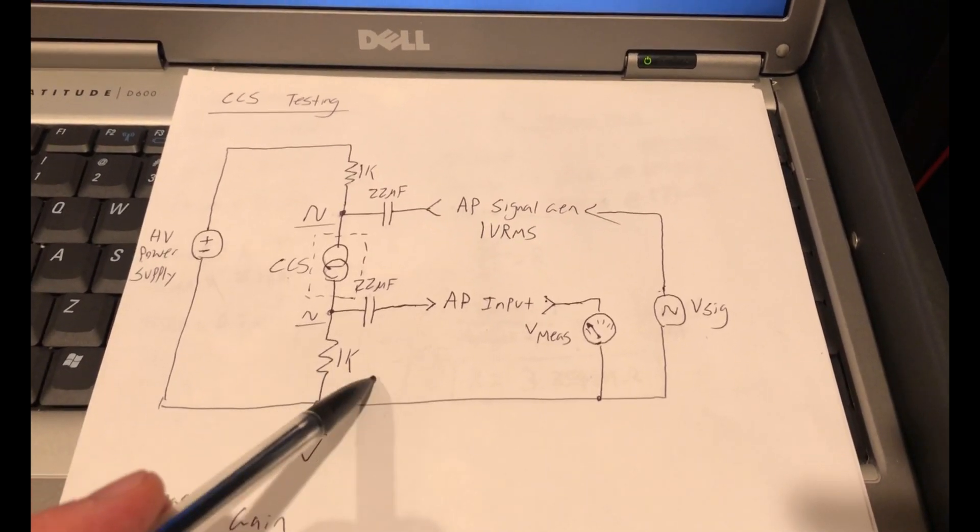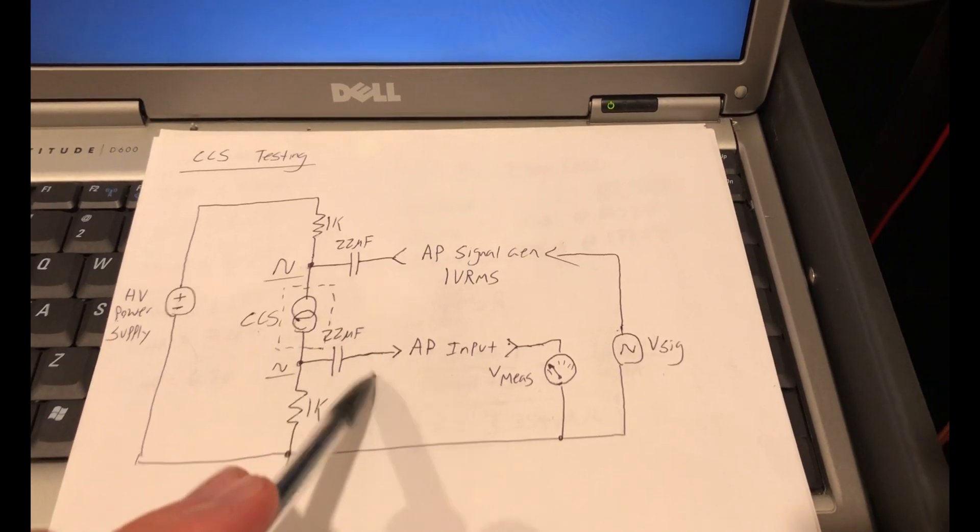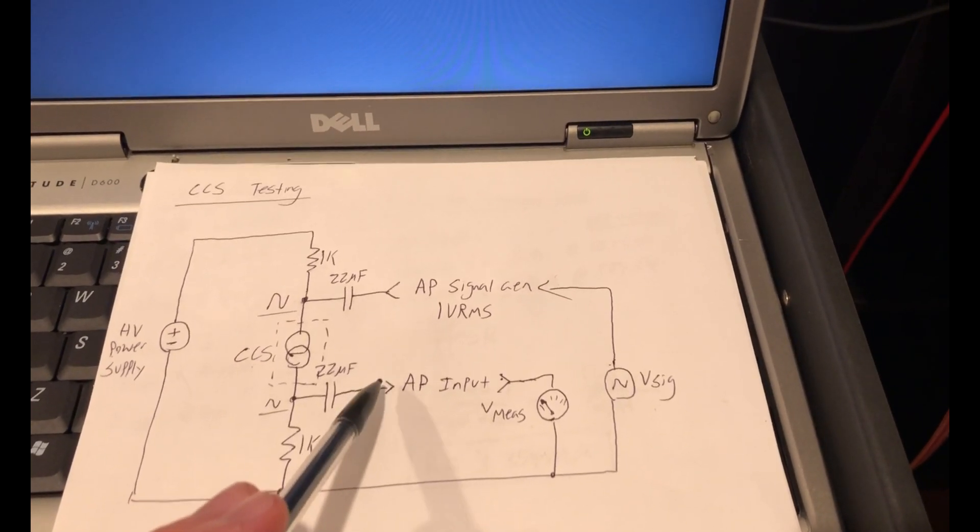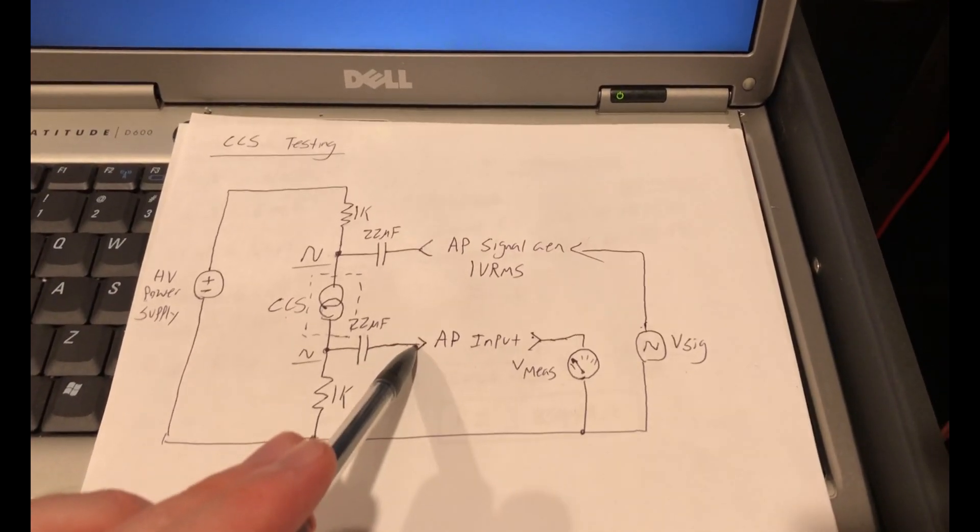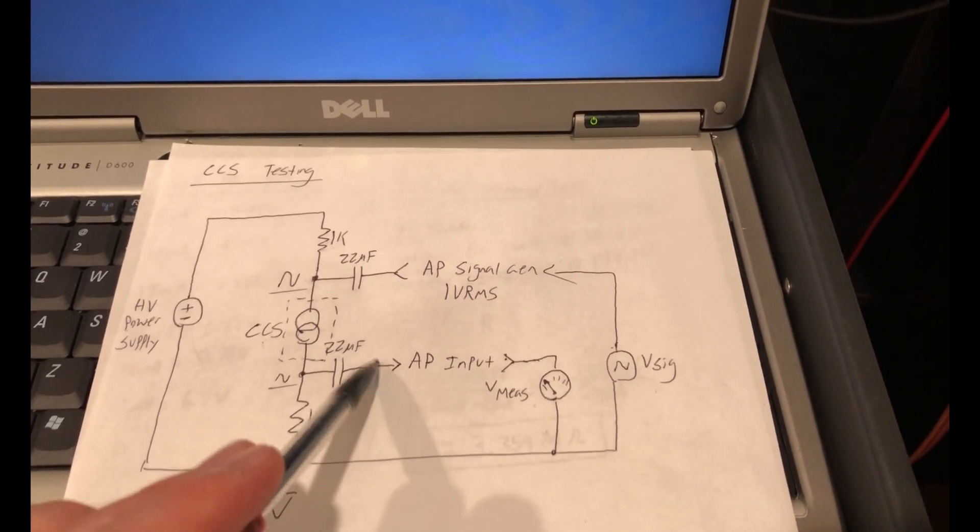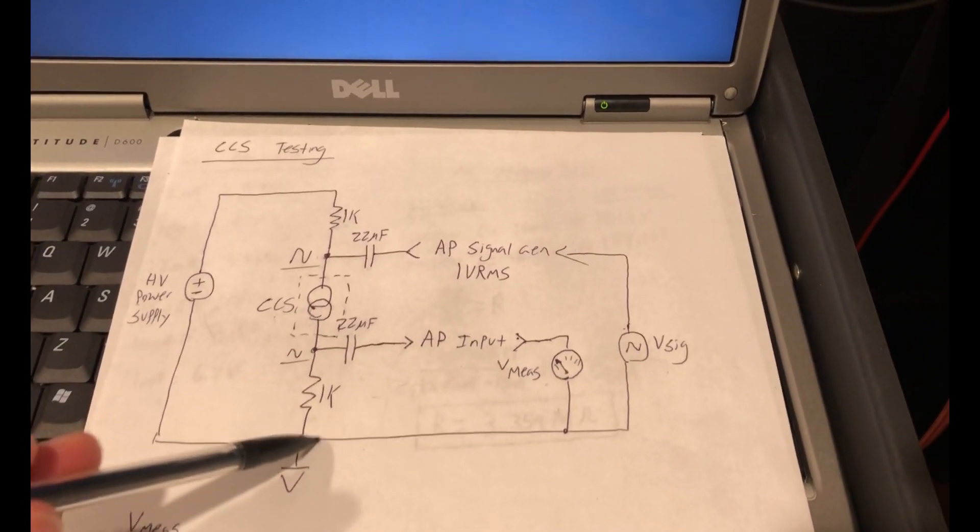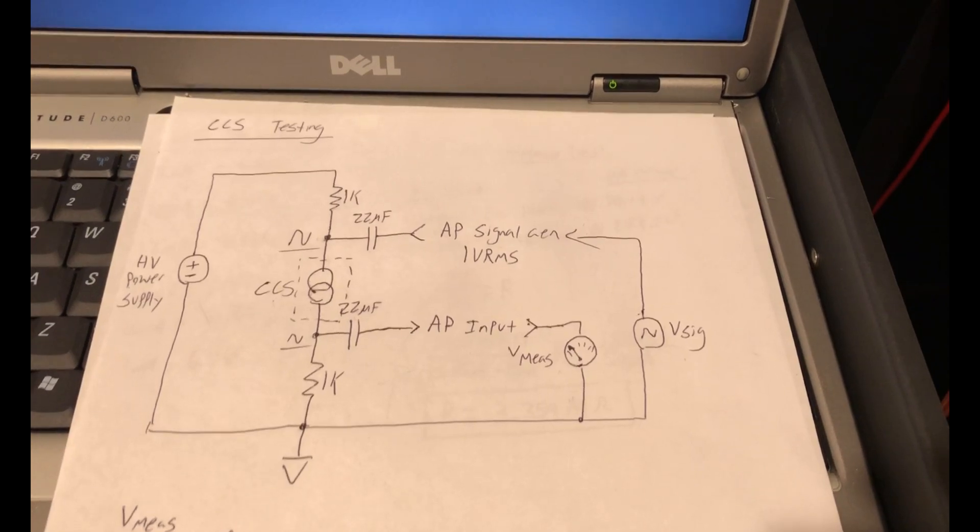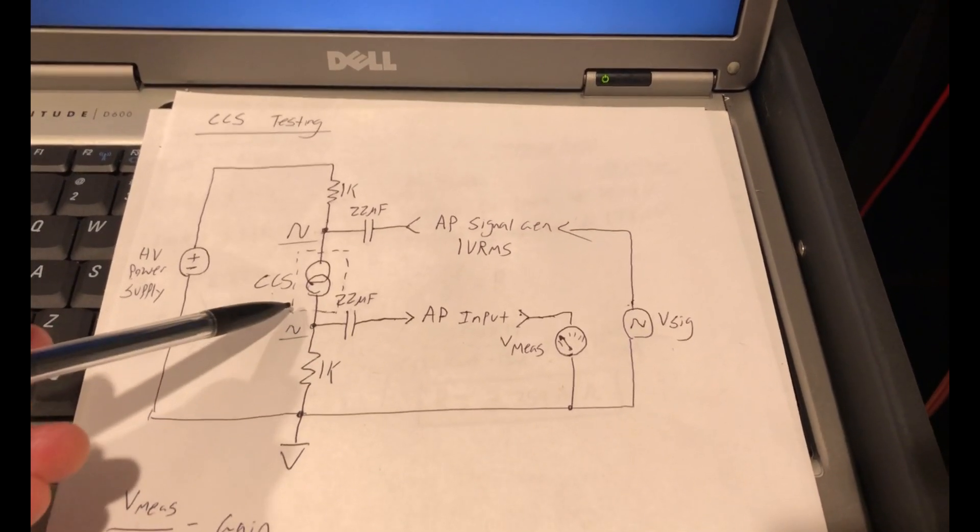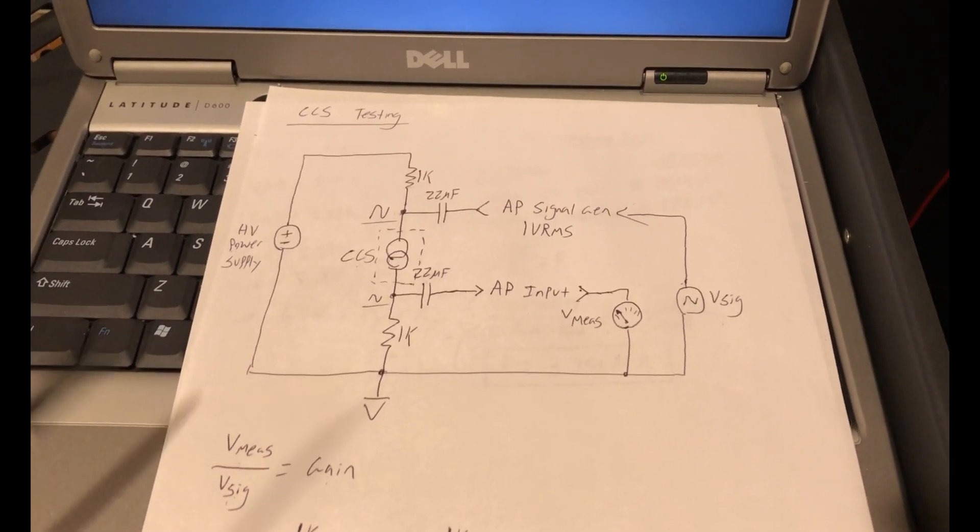The one caveat is and what seems to rear its ugly head over and over again is the AP's input capacitance. As we've discussed multiple times, the input capacitance of the AP is 270 picofarads. So 270 picofarad load in parallel with this 1k resistor at high frequencies will present a low impedance and essentially change our voltage division ratio at increasing frequency. So we need to be careful about this test and looking at the exact impedance we'll measure of our constant current source at very high frequencies, but it should at least give us a decent approximation.